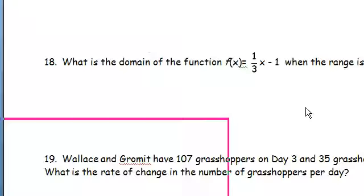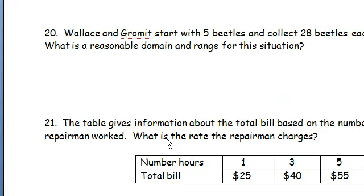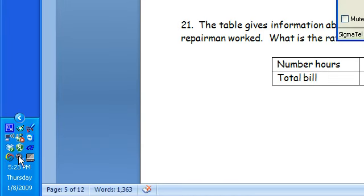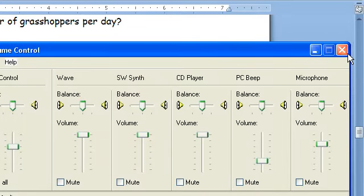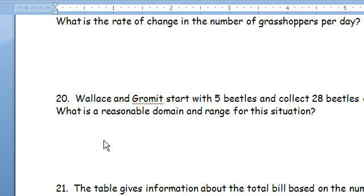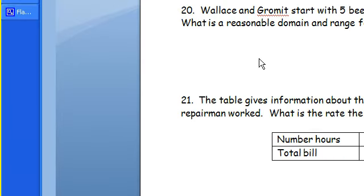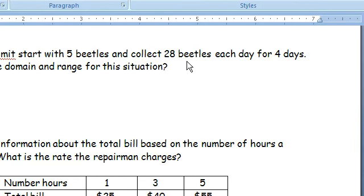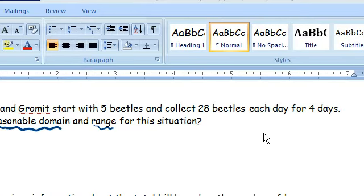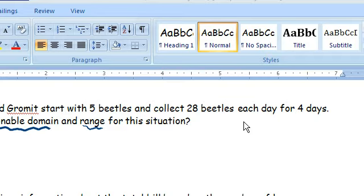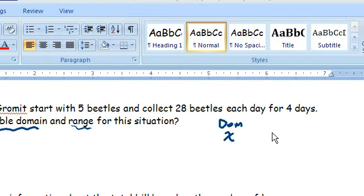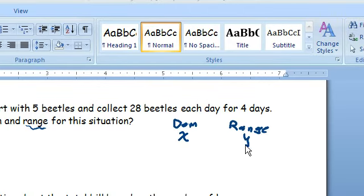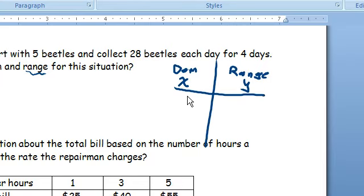Okay, let's take a look at number 20 there. So for number 20, it's another Wallace and Gromit problem. They are just all over the place today. Wallace and Gromit are starting with 5 beetles, and they collect 28 additional beetles each day for 4 days. So we need a reasonable domain and range for this situation. Well, the way I approach it is that we can think of our domain as our x values and our range as our y values. And so our x value, domain, we'll make that days.